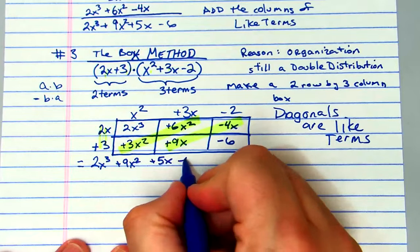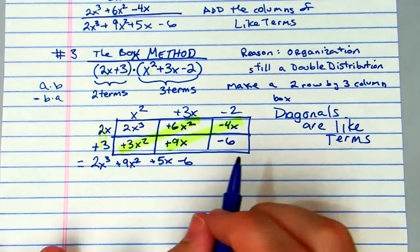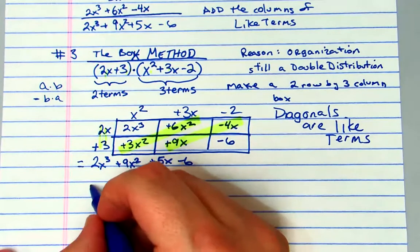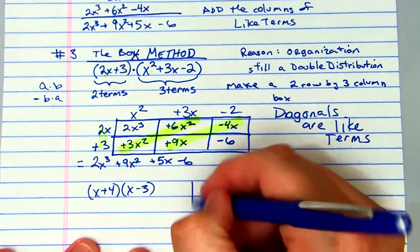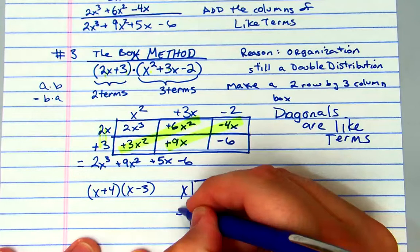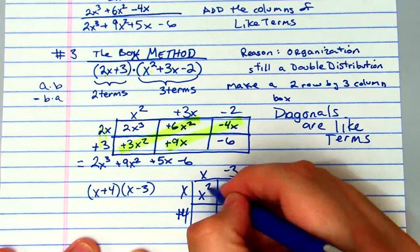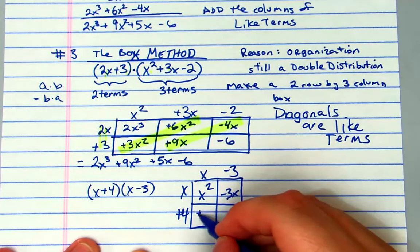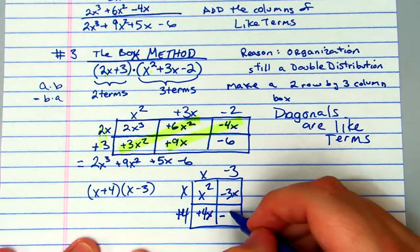And this box can be generated for anything. It can be generated for a binomial times a binomial. If you have (x + 4) times (x - 3), you would create a box that's two by two: x, plus 4, x, minus 3. You get x squared, then you get negative 3x, then you get positive 4x, then you get negative 12.